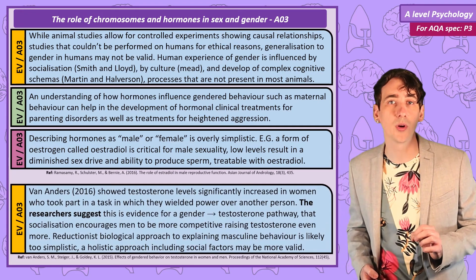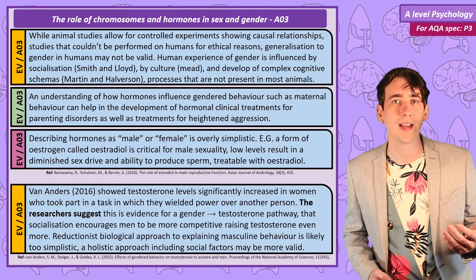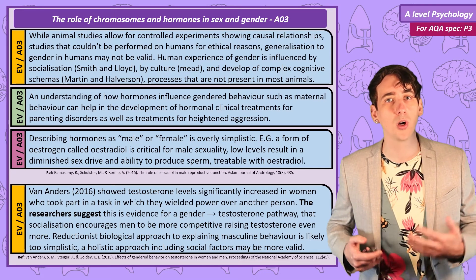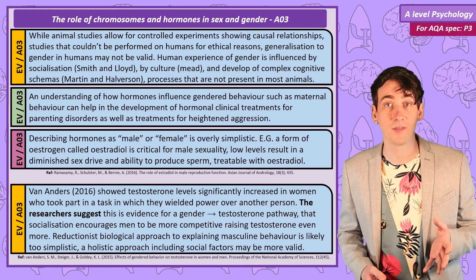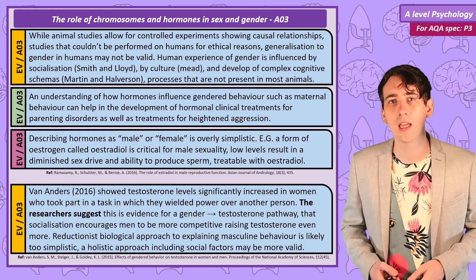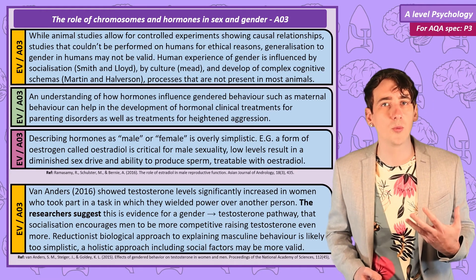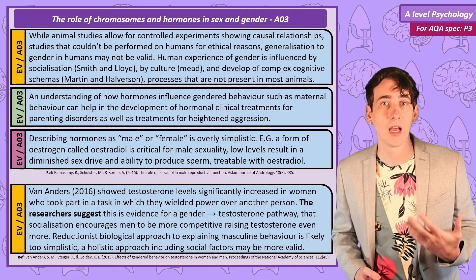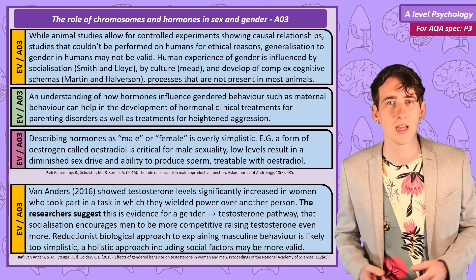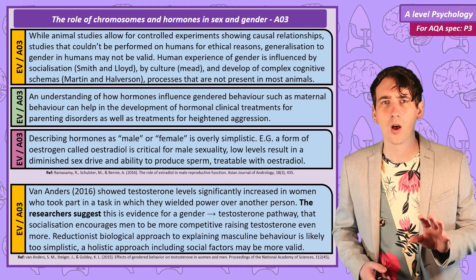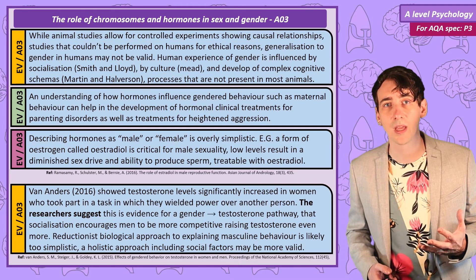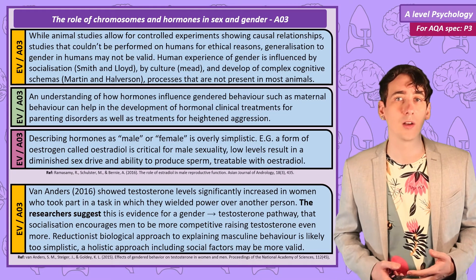A final evaluation is really a point about holism and reductionism. Work by Van Anders showed that females' testosterone levels significantly increased if they did an activity that stimulated having power over another person — it was actually a role play about firing someone from a job. The researchers suggest that rather than just testosterone leading to male gendered behaviour, there is also the opposite process. We live in a world where men are socialised to be more competitive and dominant, and women are socialised to be more cooperative, which could actually be increasing the relative difference of testosterone between the sexes even more. This suggests that a valid explanation of hormones' role in gender is likely a complex interaction between social and biological factors.